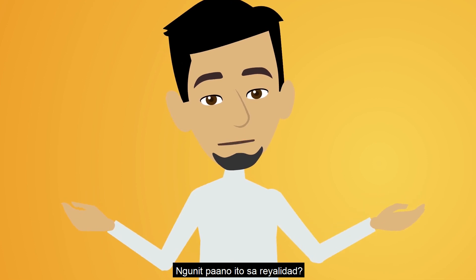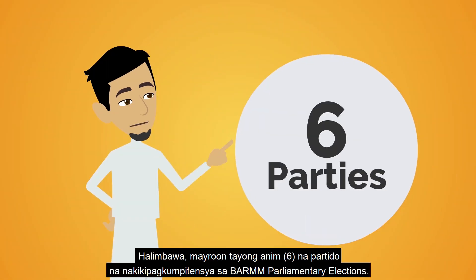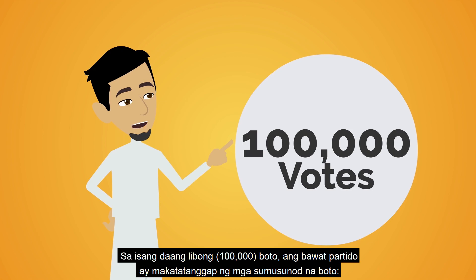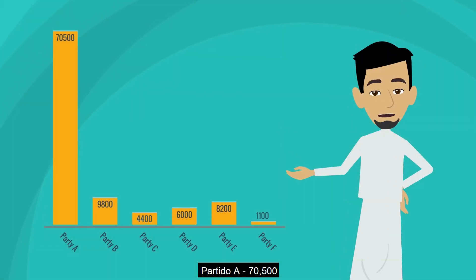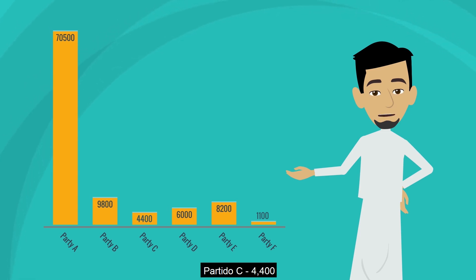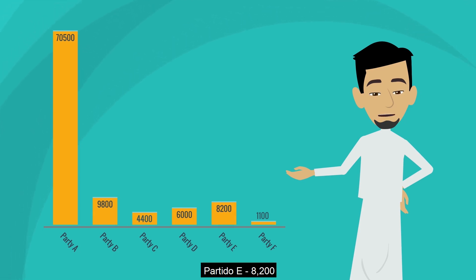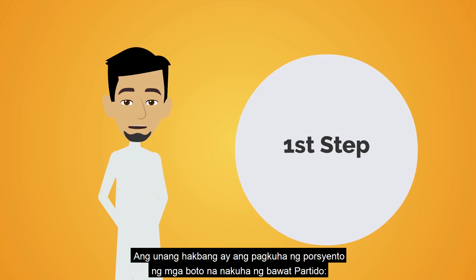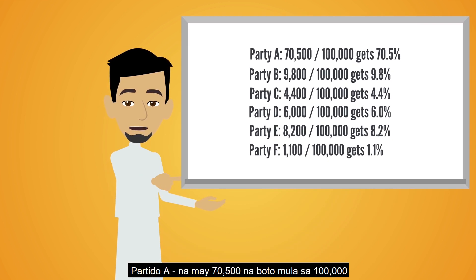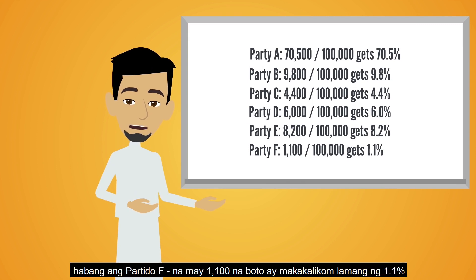But how does this look like? For example, we have 6 parties competing in the BARM parliamentary elections. Out of 100,000 votes, each party receives the following votes. The first step is to get the percentage of votes each party obtained. In our example, Party A, with 70,500 votes out of 100,000, gets 70.5 percent, while Party F, with 1,100 votes, only gets 1.1 percent.